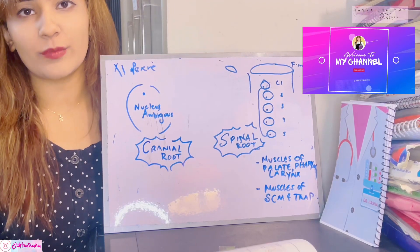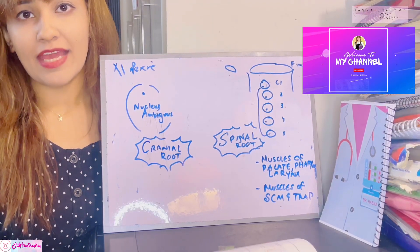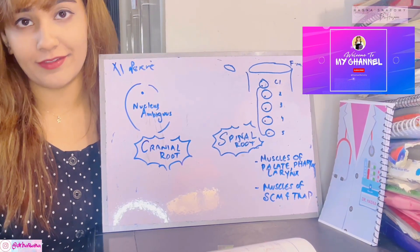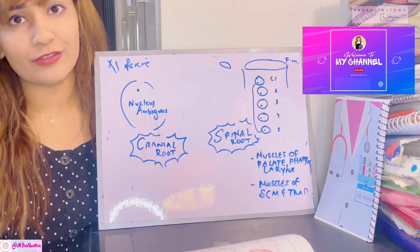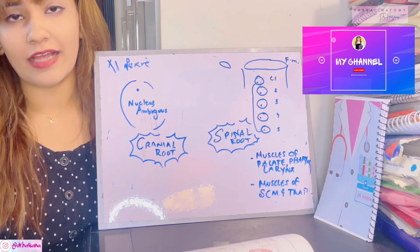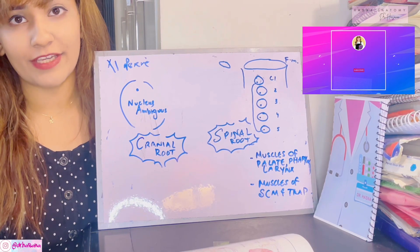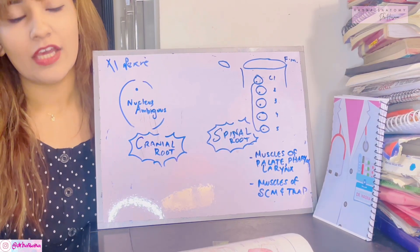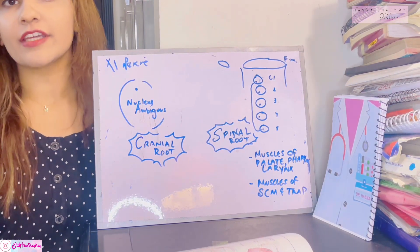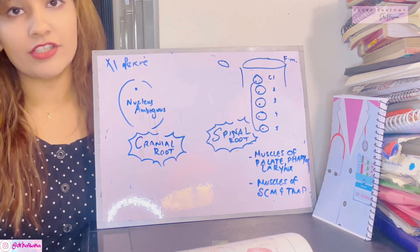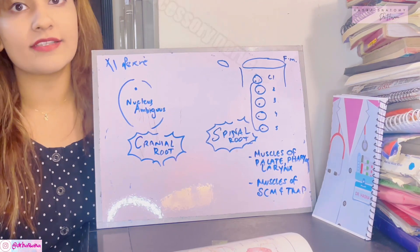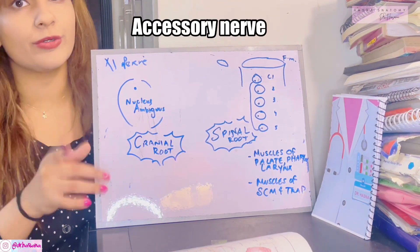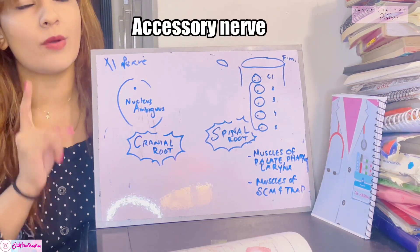Assalamu alaikum, this is Dr. Hasna with Hasna's Anatomy. Today we're discussing one of the cranial nerves — the 11th nerve, also known as the accessory nerve. Don't forget to subscribe to my channel; I make anatomy a piece of cake. Let's get right into the video.